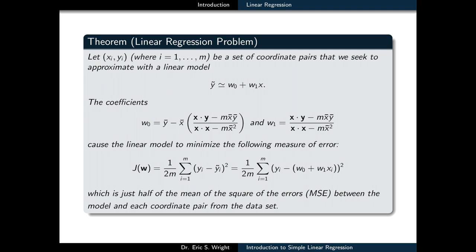So these coefficients cause the linear model to minimize a particular measure of error called half of the mean squared error. And what the mean squared error represents is the mean of the squares of the deviations between each y-coordinate in the data set and the corresponding prediction of what that y-coordinate ought to be for each given x-coordinate, y-tilde.